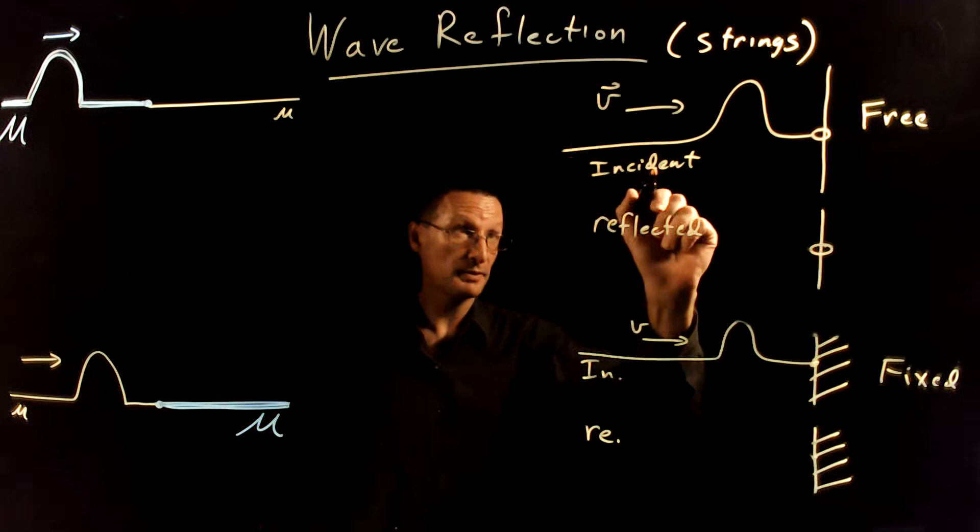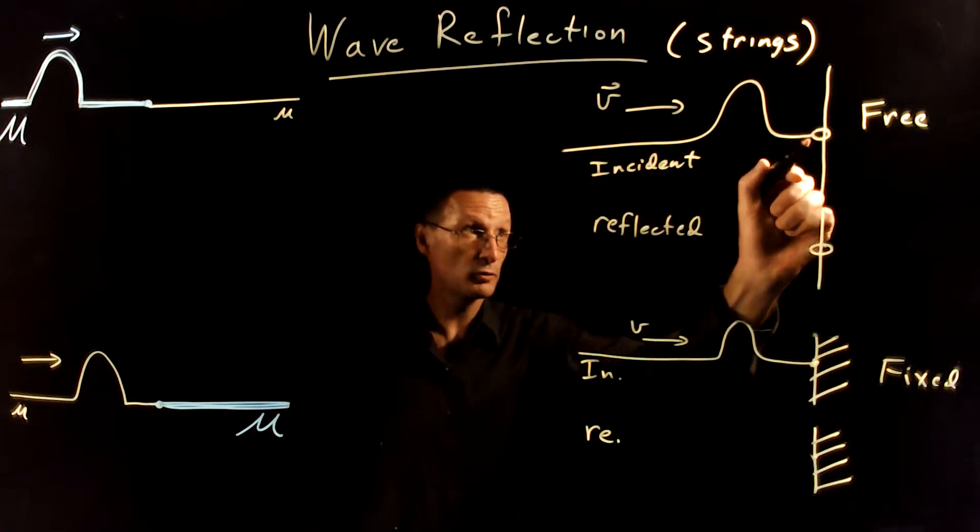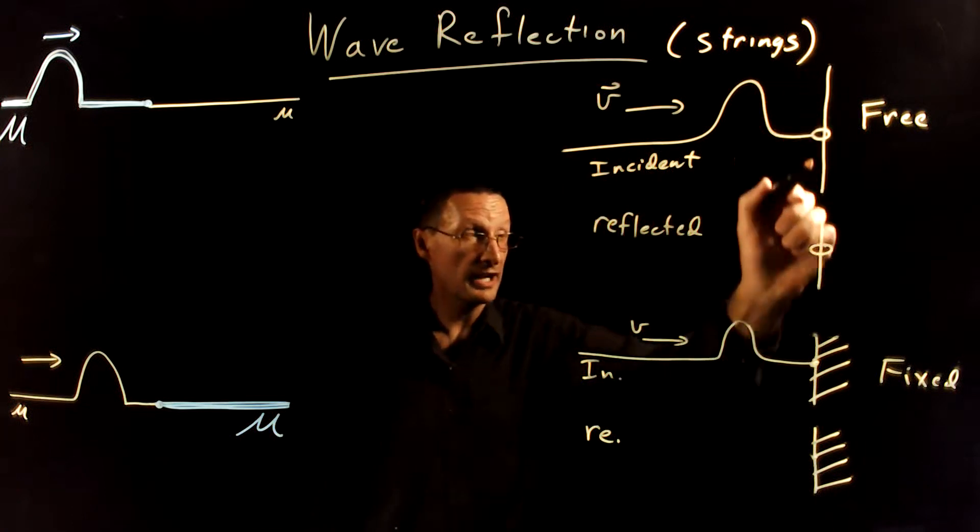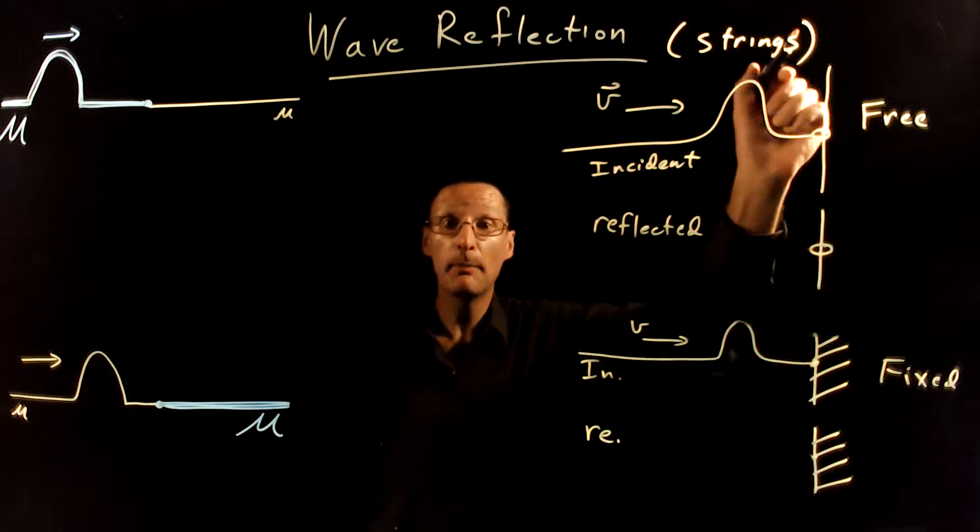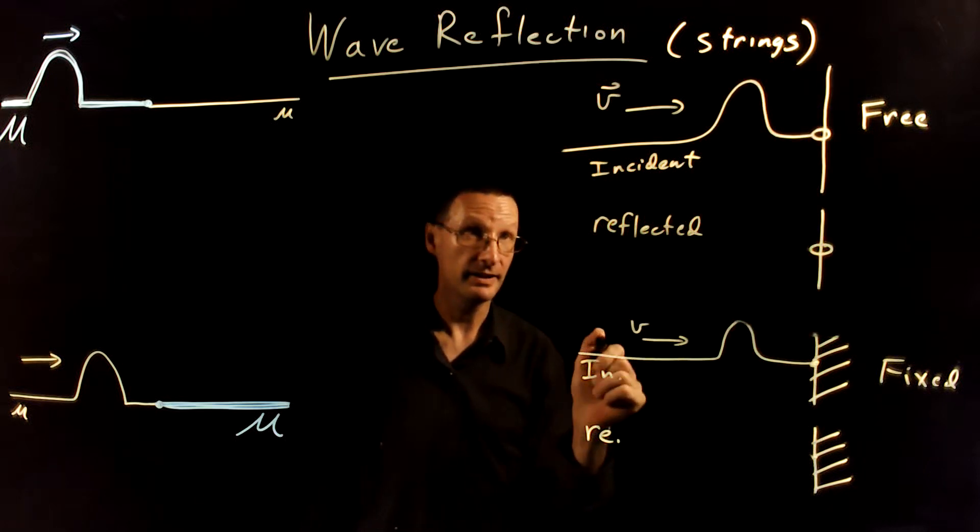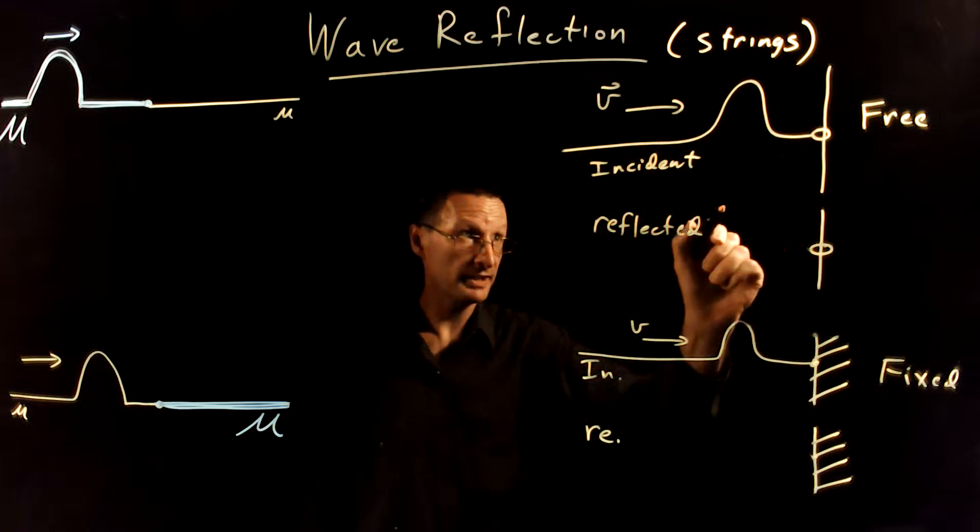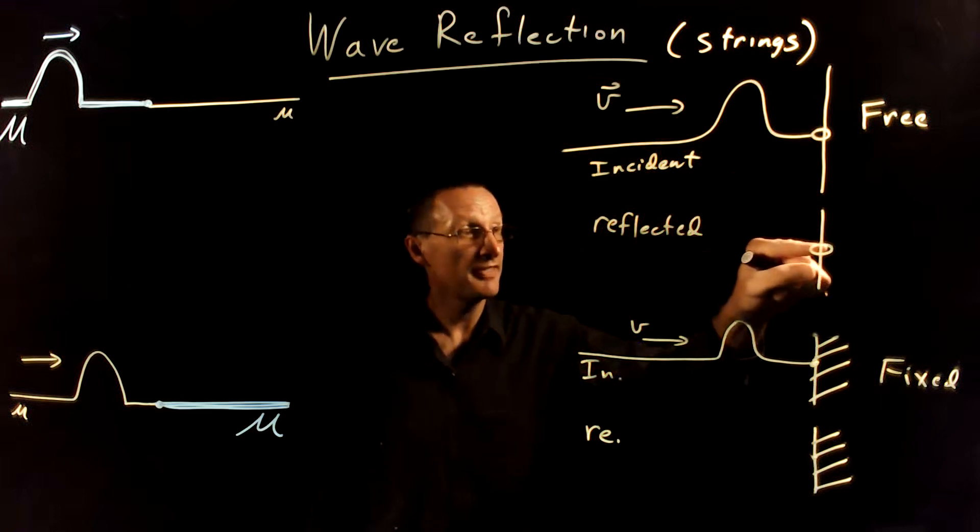The situation we have for the first example is we have a string that's tied to a ring, and the ring is around a pole. That ring is allowed to move - it's free to go up and down at the very end.